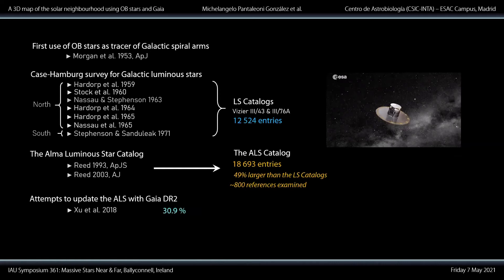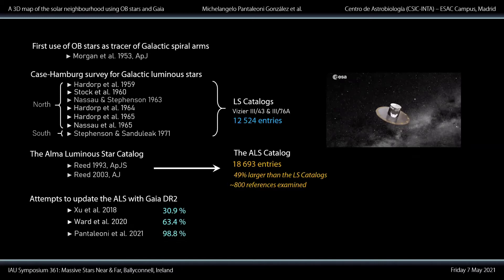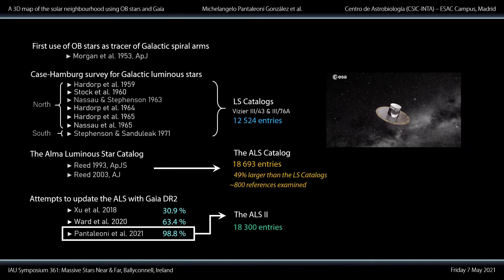But now we live in the Gaia era. For the first time we can systematically measure parallaxes to the required degree of precision to create a galactic map. A new race has begun with the second data release toward a full cross-match of the ALS with Gaia. Automatic attempts reached only a third to two-thirds completion, meaning more careful cross-correlations were needed. But two months ago we succeeded in this task and built what we now call the ALS2, in honor of Cameron.